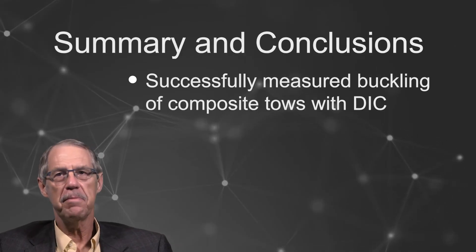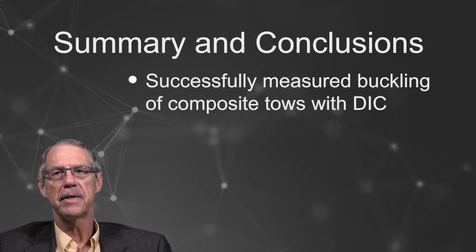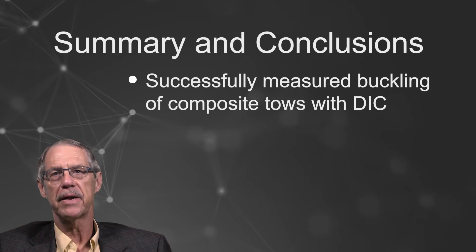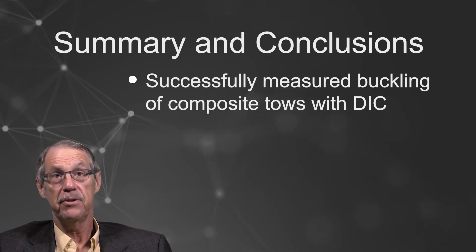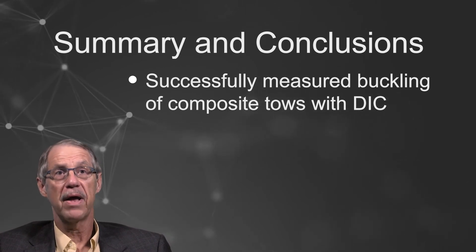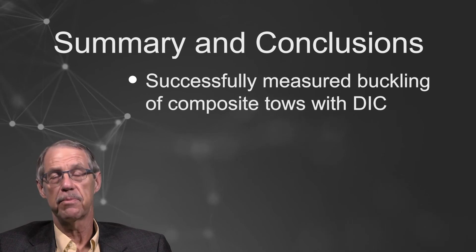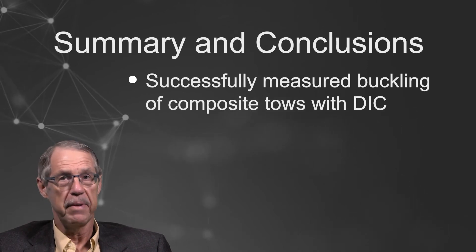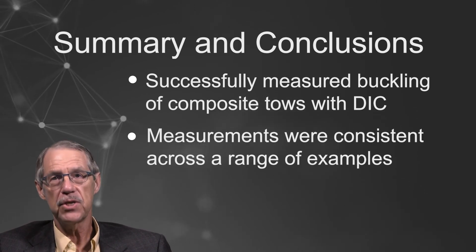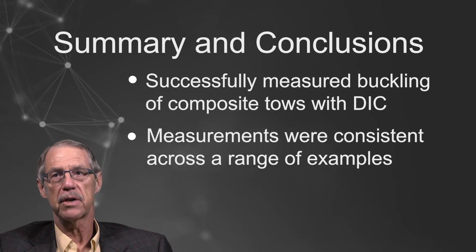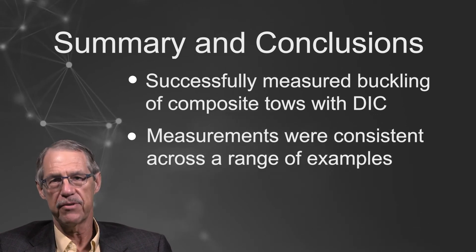Let's summarize what we've learned. We successfully measured buckled, unbonded composite toes using stereo image correlation for a range of applied curvatures. The key to this is the use of crossed polarizing filters to cut the reflections from the curved samples. The measured buckled shapes were very consistent for all radii curvature and across a variety of samples that we tested.